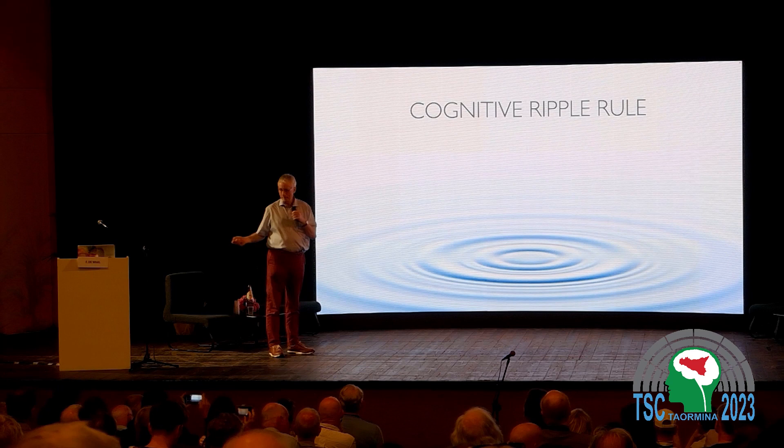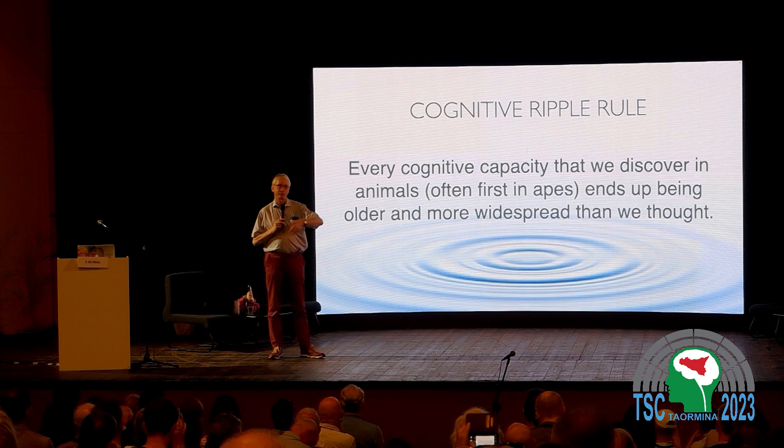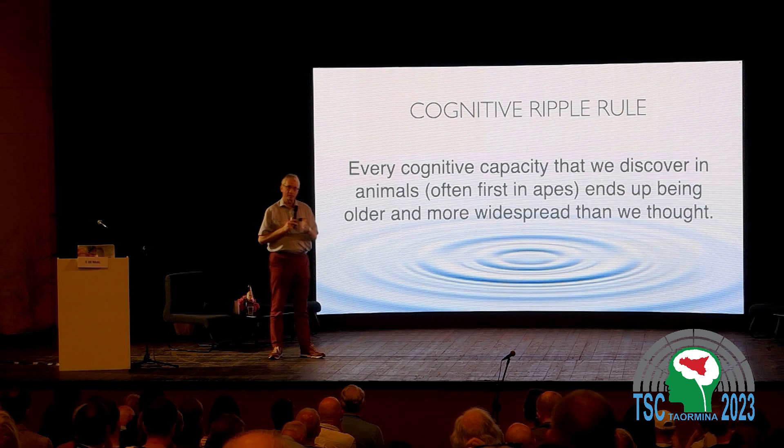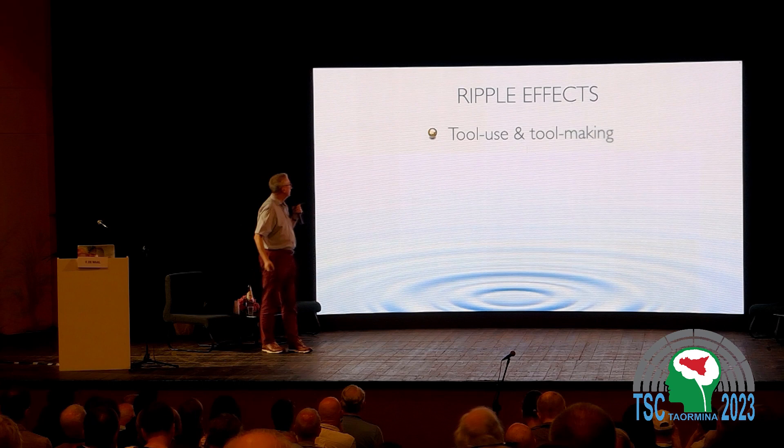I personally believe in the 'ripple rule' — everything we discover first in apes ends up being discovered in many other species. I don't think there is a fundamental difference between the chimpanzee and other animals, and I don't think there is a fundamental difference between humans and chimpanzees. I think there is continuity everywhere. The ripple rule is really what we have seen in the last 20 years in the study of cognition in animals.